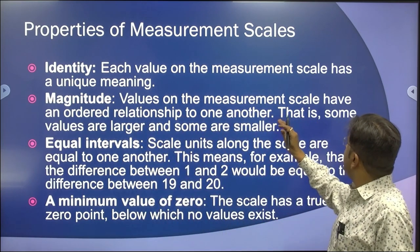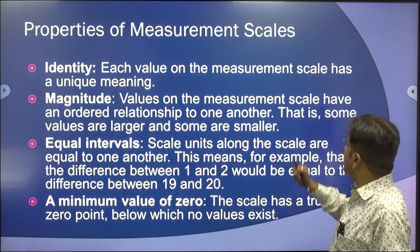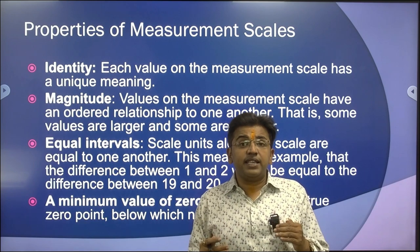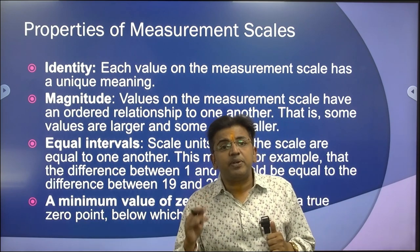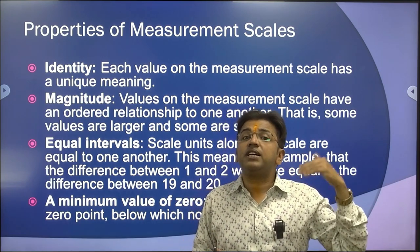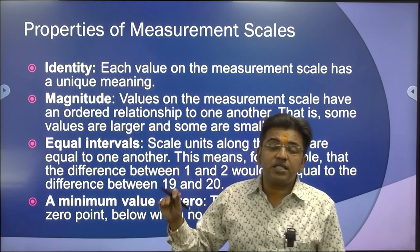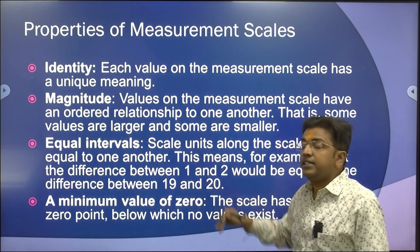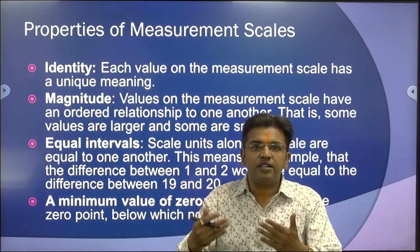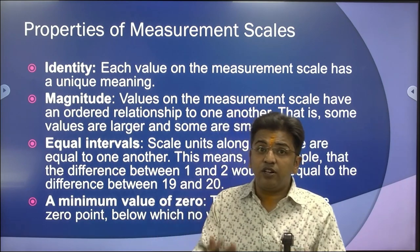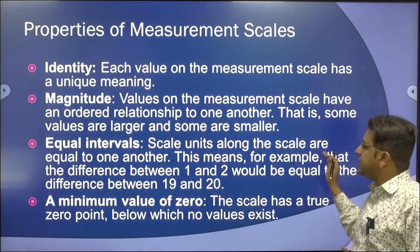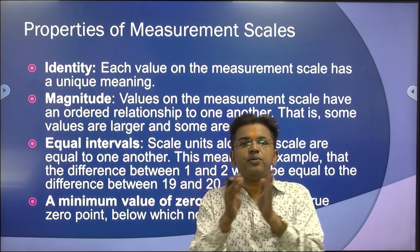Then magnitude — values of the measurement scale have an order relationship to one another; some values are larger and some are smaller. If one person has a height of 5 feet 11 inches and another has 5 feet 6 inches, the person with 5 feet 11 inches has greater magnitude. There must be an order relationship. Then equal intervals — scale units along the scale are equal to one another, meaning every unit has equal measurement.